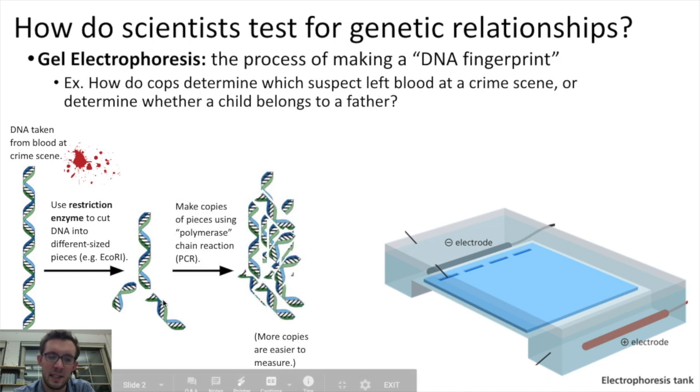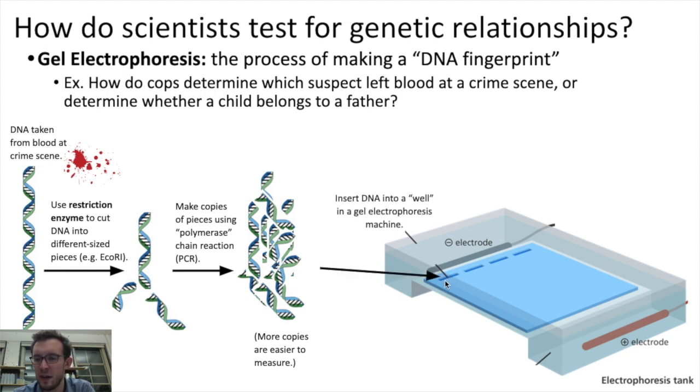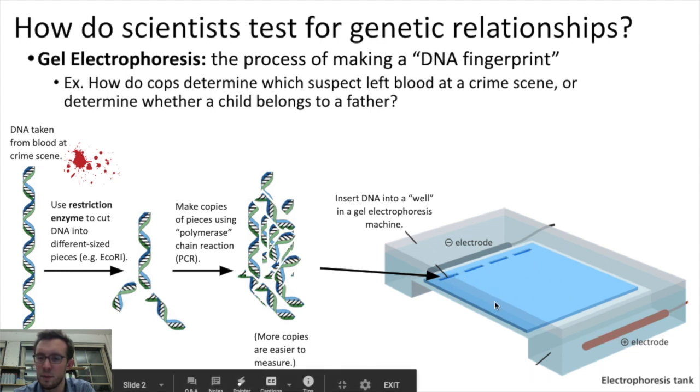Next, they'll make some copies of the DNA pieces by using polymerase chain reaction. So they'll use the enzyme polymerase to make a bunch of copies, the idea being that more copies will make these easier to measure. And then last, they take the DNA sample and put it into a well, that is one of these little divots here, into a gel plate, that's this blue gel, on an electrophoresis machine.